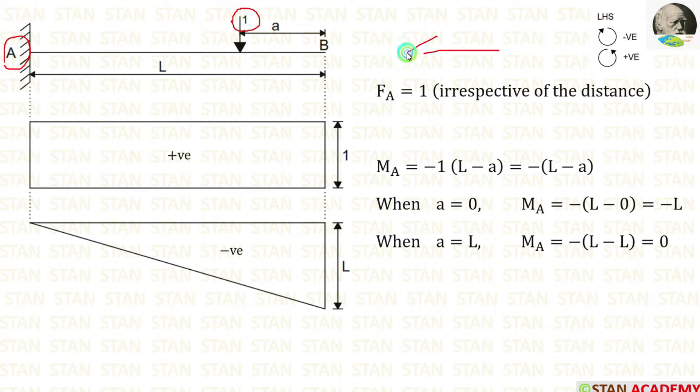In this case we are moving towards left hand side. Clockwise will be negative, anti-clockwise will be positive. The unit load is acting in the clockwise direction towards point A, so it will be negative.